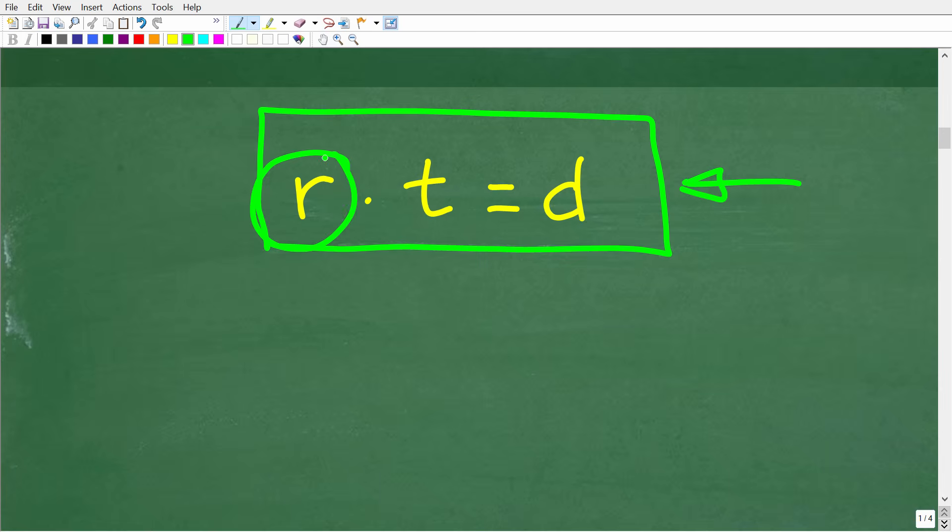So rate is basically velocity or speed. Of course, we have time and distance. Anytime you have a problem that involves rate, time, and distance, this is the relationship between those variables.